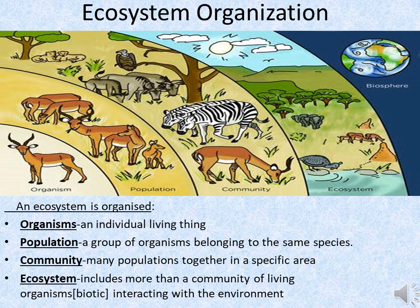An organism is an individual living thing. When these individual living things come in a group, they form a population. And when many populations come together, they contribute towards a community. And when these communities interact with the abiotic components of that particular area, it is termed as an ecosystem.